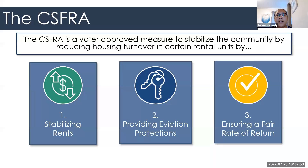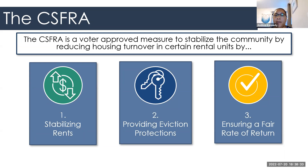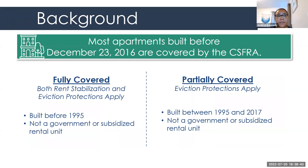Let's talk about covered units. The CSFRA stands for the Community Stabilization and Fair Rent Act. That was a voter-approved measure by the residents in the city of Mountain View, and it's meant to stabilize the community by reducing housing turnover in certain rental units. It does that in three main ways: first, by stabilizing rents, which is what we're focusing on tonight — every year there is a rent cap that is announced. The second way is by providing eviction protection. And the third way is by ensuring that landlords still have a fair rate of return on their property.